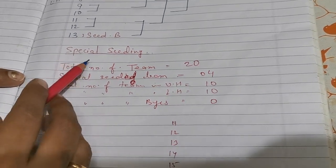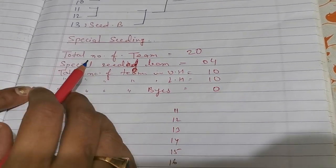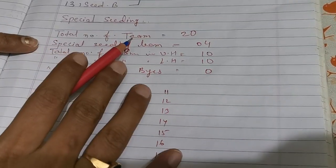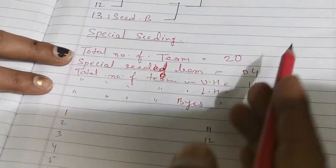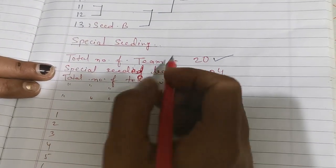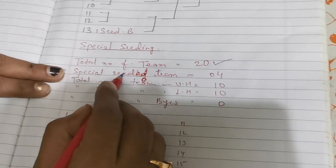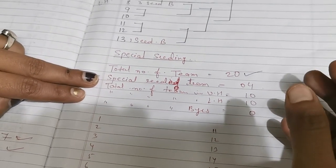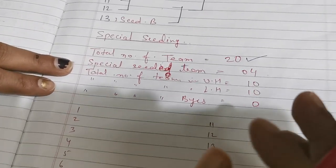For special seeding, those who will get the special seeding will never get the bye. Here total number of teams is 20. Special seeded teams will be already given in the question paper. Special seeded teams are most of the semi-finalists or the last year winner. The special seeded team will depend on the organizer.